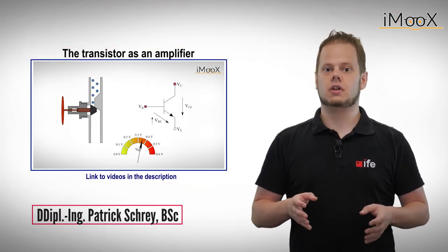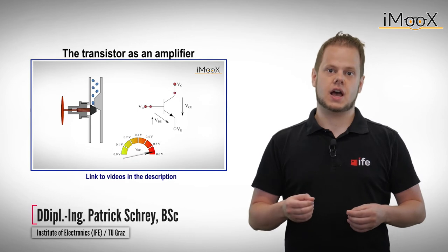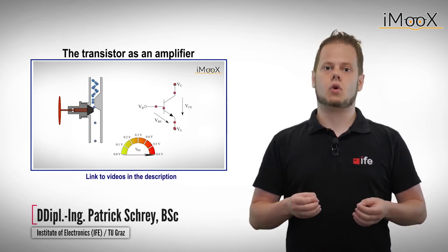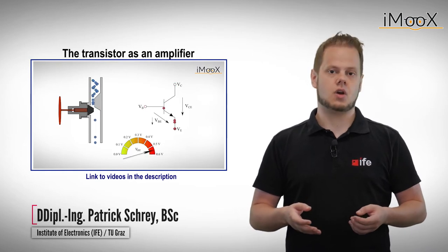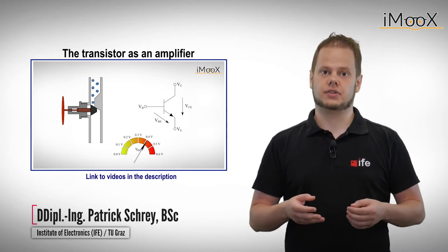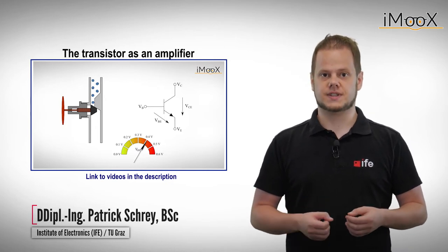In our previous videos, you learned about the basics of transistors and how we can amplify a signal with them. But there's a lot more we can do with transistors, from building current sources over duplicating a current to band-gap voltage references. Join us again for more transistor circuits.